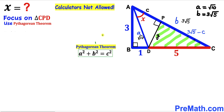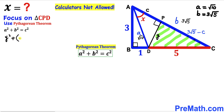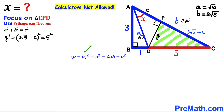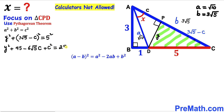Let's focus on right triangle CPD and apply the Pythagorean theorem. The hypotenuse is 5 and the two legs are y and (3√5 - c). Filling in the formula: y² + (3√5 - c)² = 5² = 25. We apply the identity (a - b)² = a² - 2ab + b², which expands to y² + 45 - 6√5·c + c² = 25.